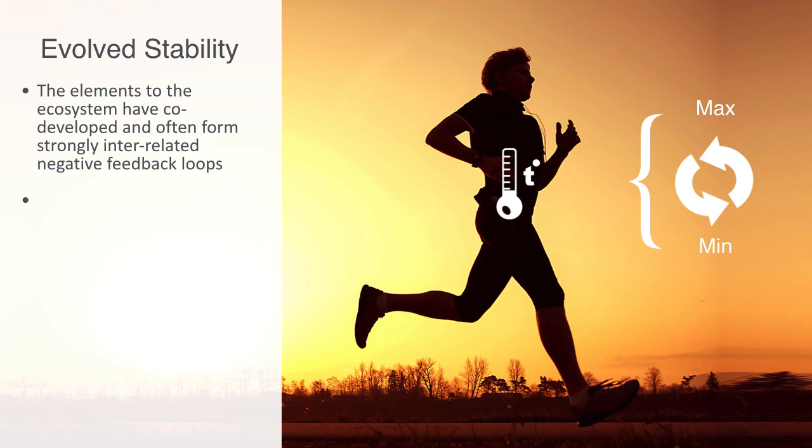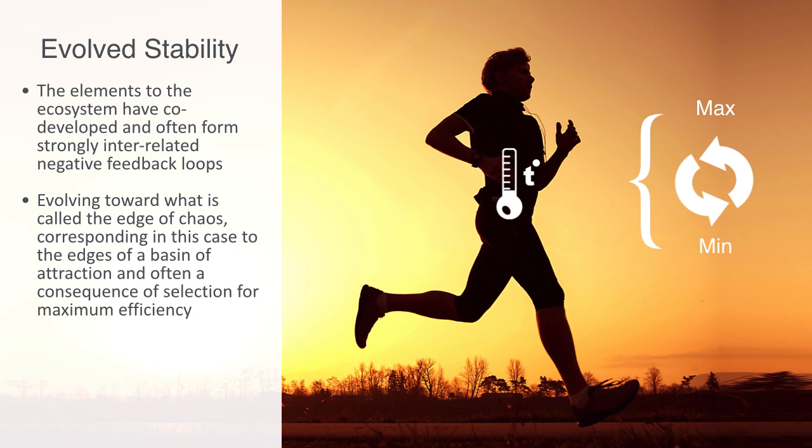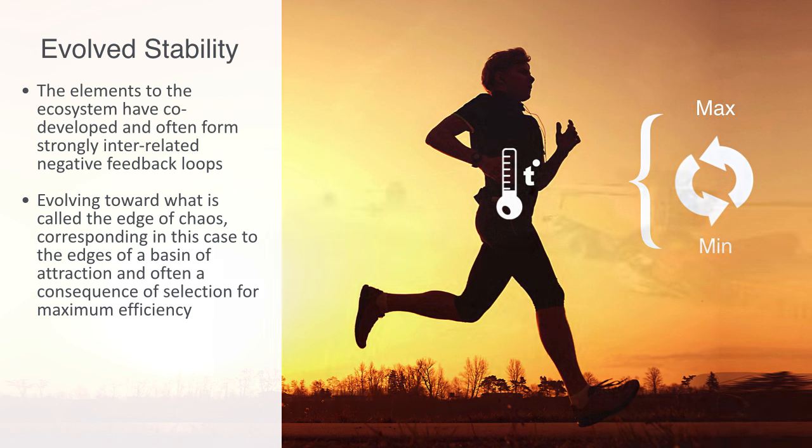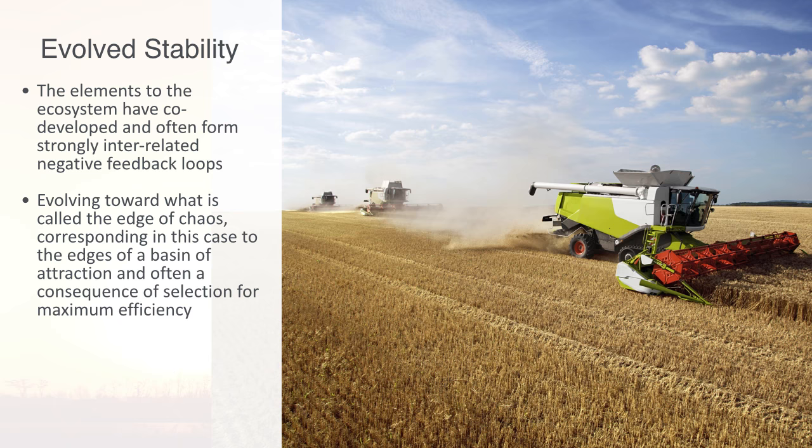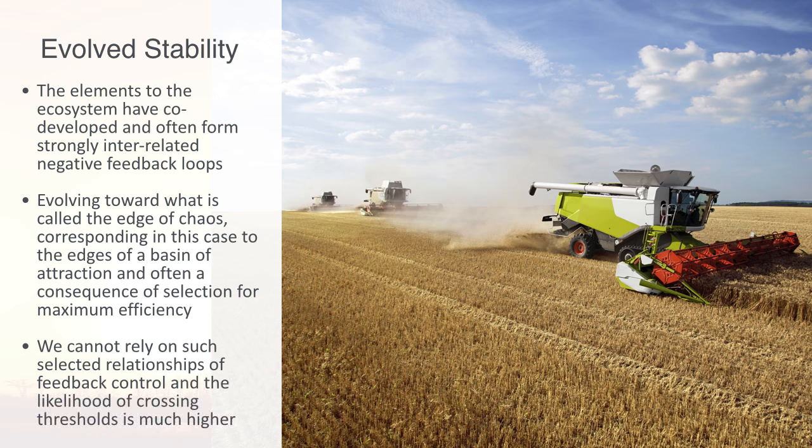Evolving towards what is called the edge of chaos, corresponding in this case to the edges of the basin of attraction, is often a consequence of selection for maximum efficiency. Recently developed industrial systems, systems such as managed fisheries and virtually all agro-systems, for example, have short co-evolutionary histories. Therefore, we cannot rely on such selected relationships of feedback control, and the likelihood of crossing thresholds is much higher, as evidenced by the many examples of collapsed fisheries and other degraded agricultural and forestry regions.